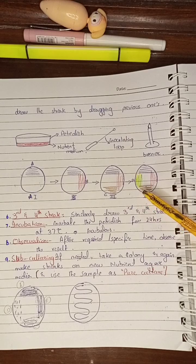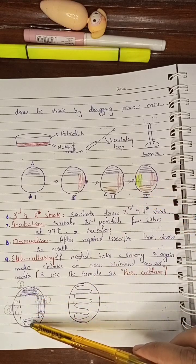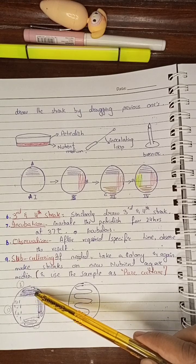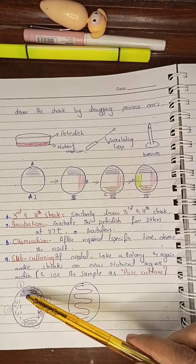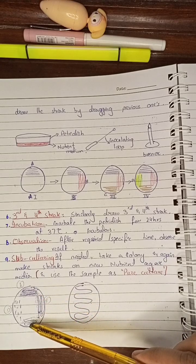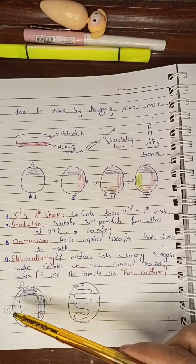The benefit we achieve from this type of streaking is that we get different types of colonies. First, we get plenty of colonies in streak A, then separate colonies in B, again separate in C, and individual isolated colonies in streak D.